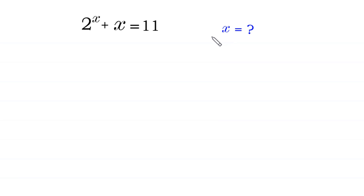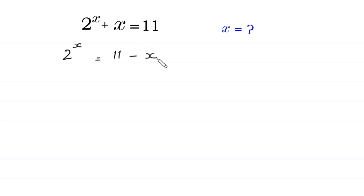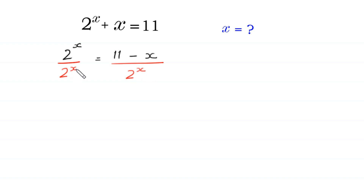First of all, we move this plus x to the right side. 2 to the power x is equal to 11 — this plus x becomes negative x at the right side. Now from here, we divide both sides of this equation by 2 to the power x. The right side we divide by 2 to the power x, and this 2 to the power x will be cancelled with this 2 to the power x, and here is left 1.